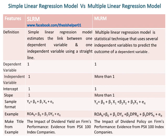The dependent variable in Simple Linear Regression Model is one, whereas the dependent variable in Multiple Linear Regression Model is also one. The independent variable in Simple Linear Regression Model is one, whereas the independent variable in Multiple Linear Regression Model is more than one.